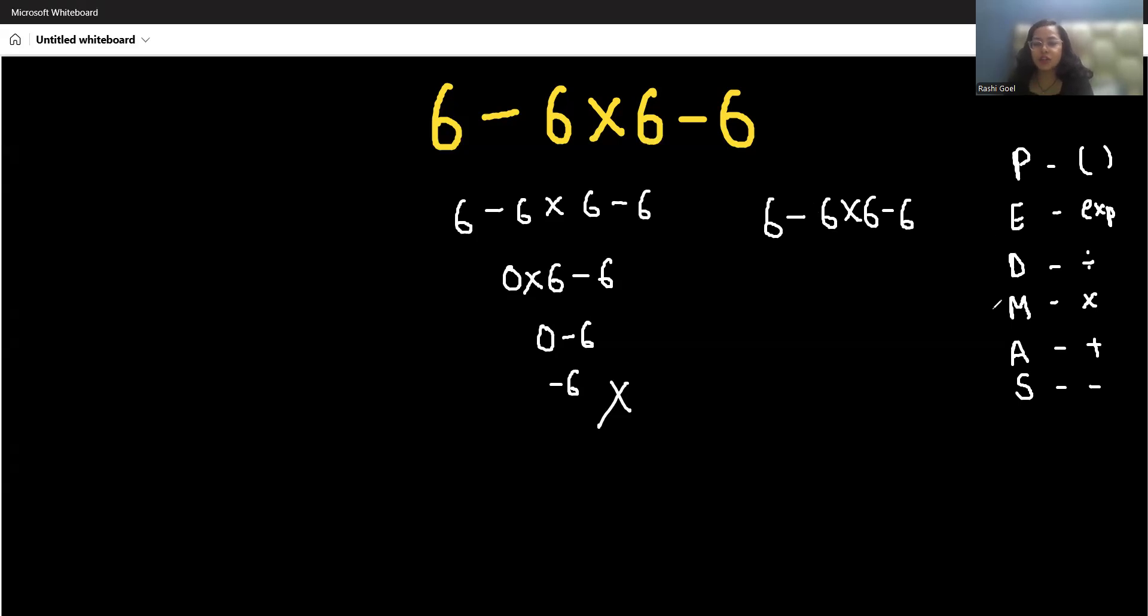You have multiplication and subtraction, so you have to give priority to multiplication first. So 6 minus 6 times 6 is 36 minus 6. Now there is only one operation left, that is subtraction. You can solve it from left to right now.